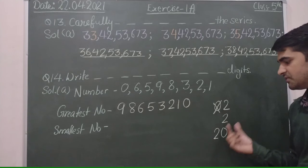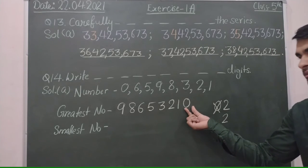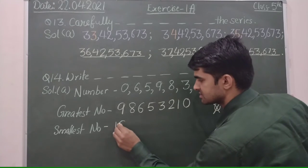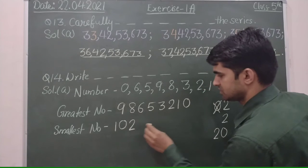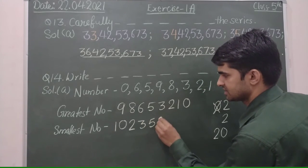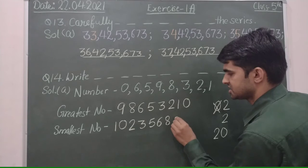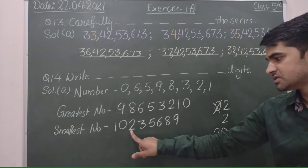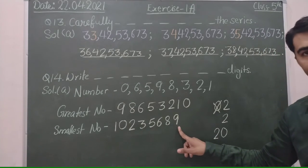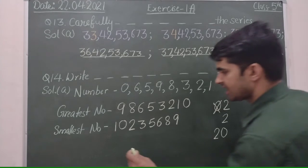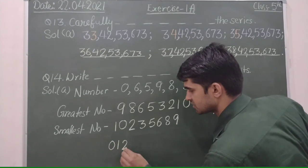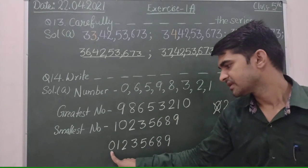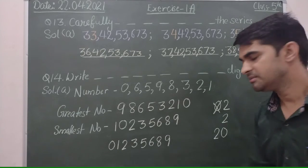We will write it like this: 1, 0, 2, 3, 5, 6, 8 and 9. Now here, 1, 2, 3, 4, 5, 6, 7, 8. If we write it like this: 0, 1, 2, 3, 5, 6, 8, 9. It means at left side we write 0.